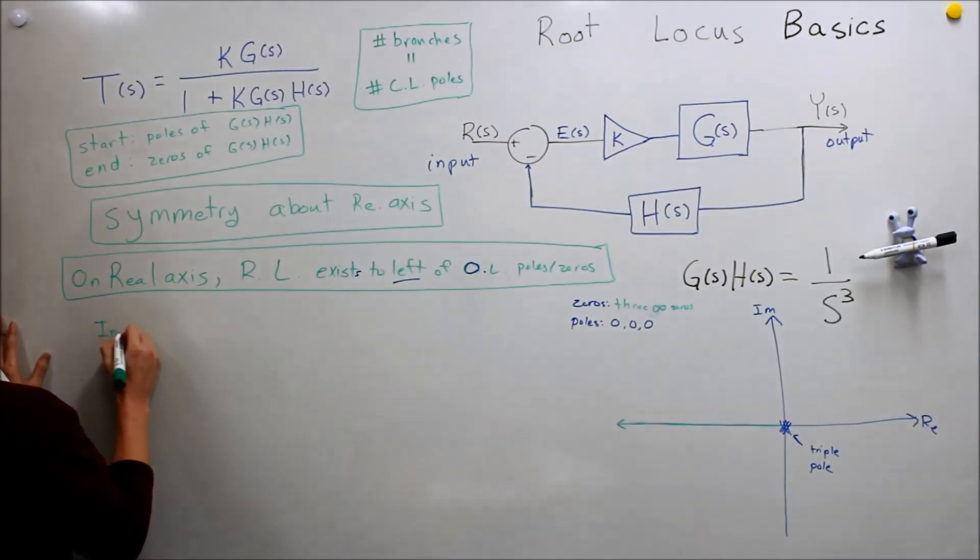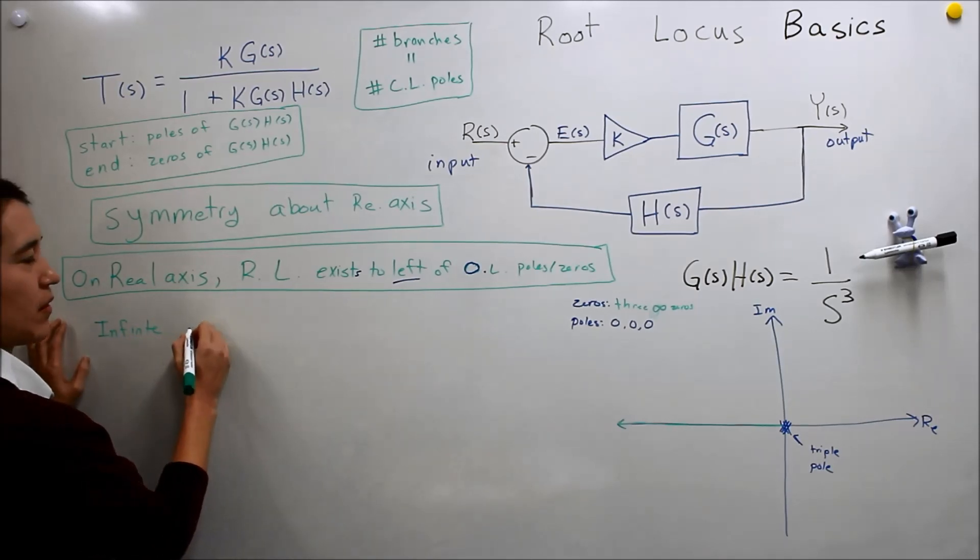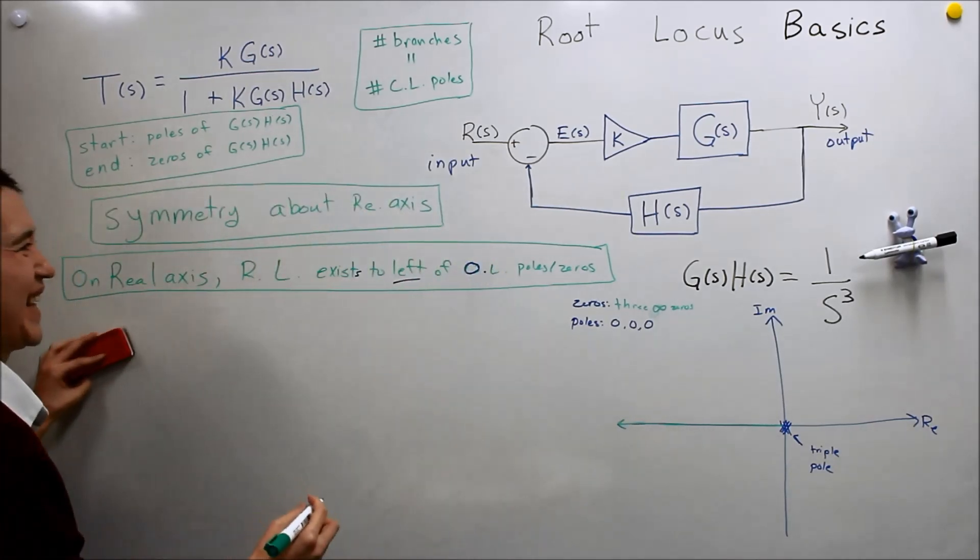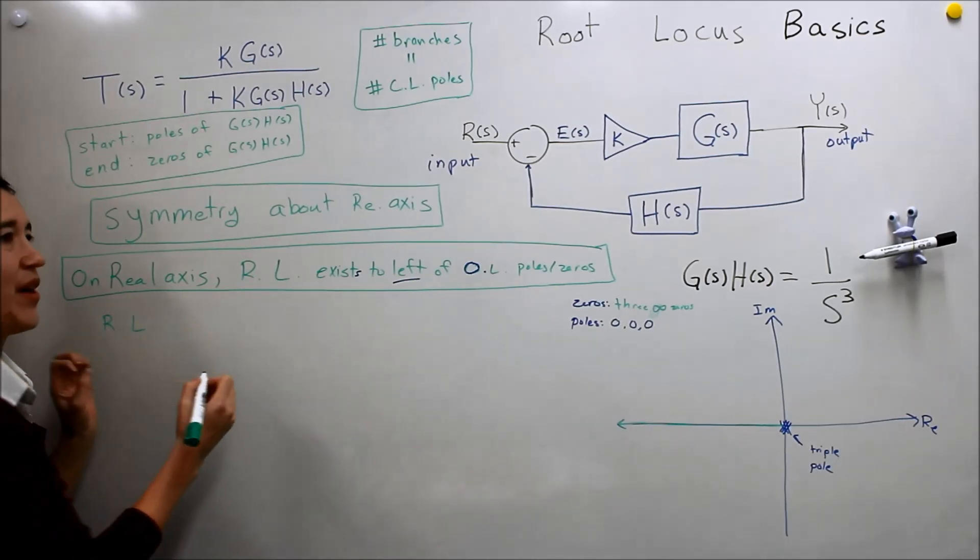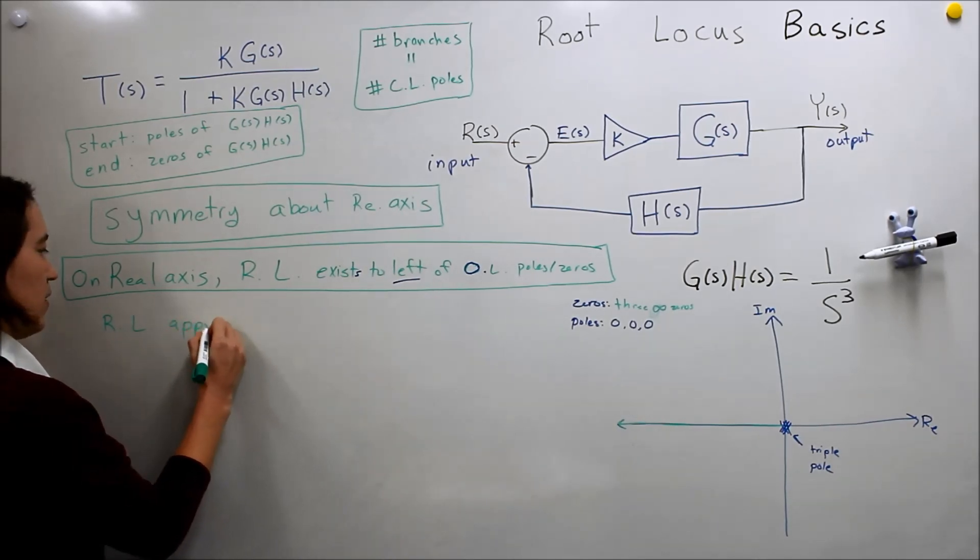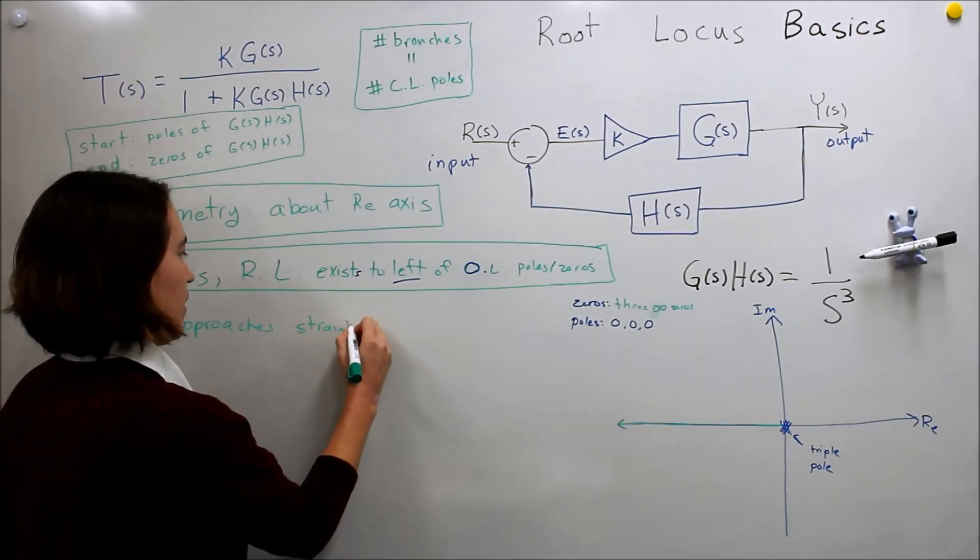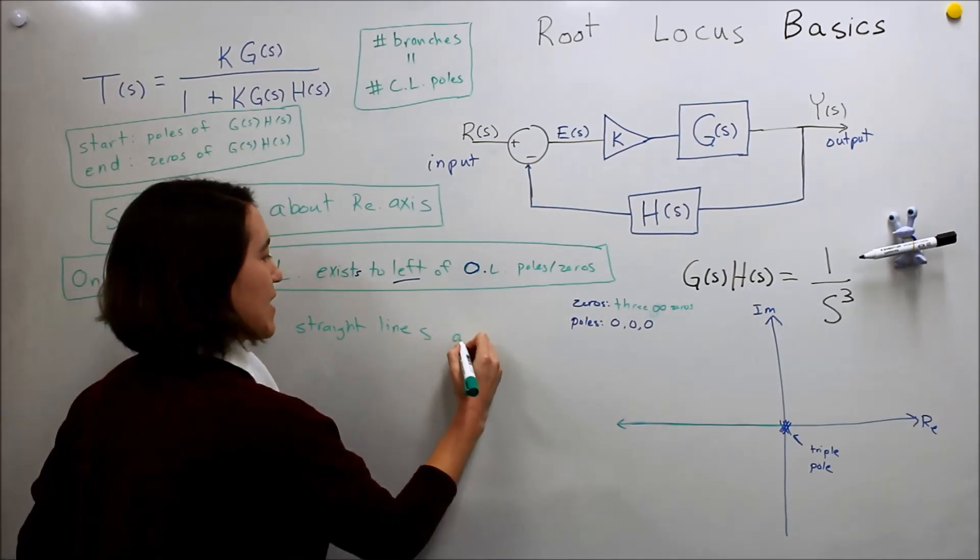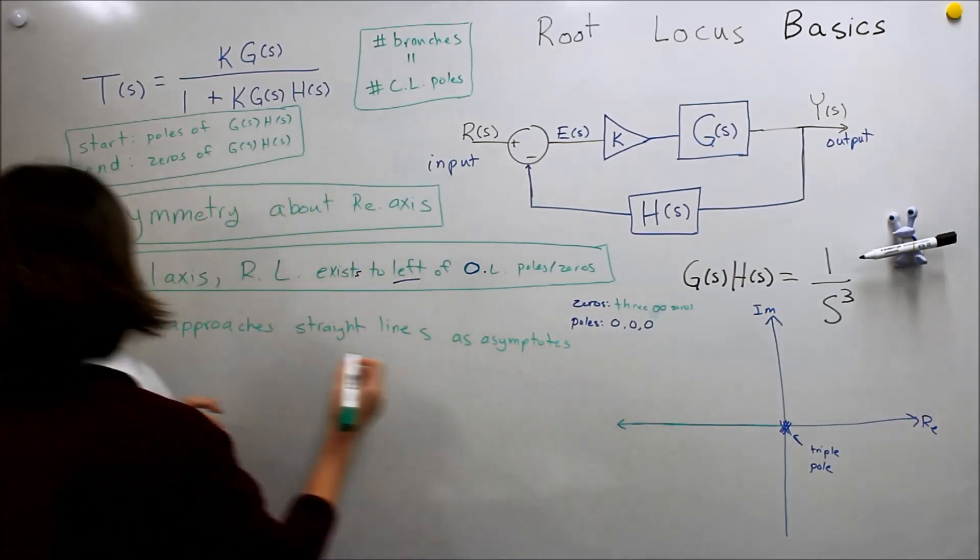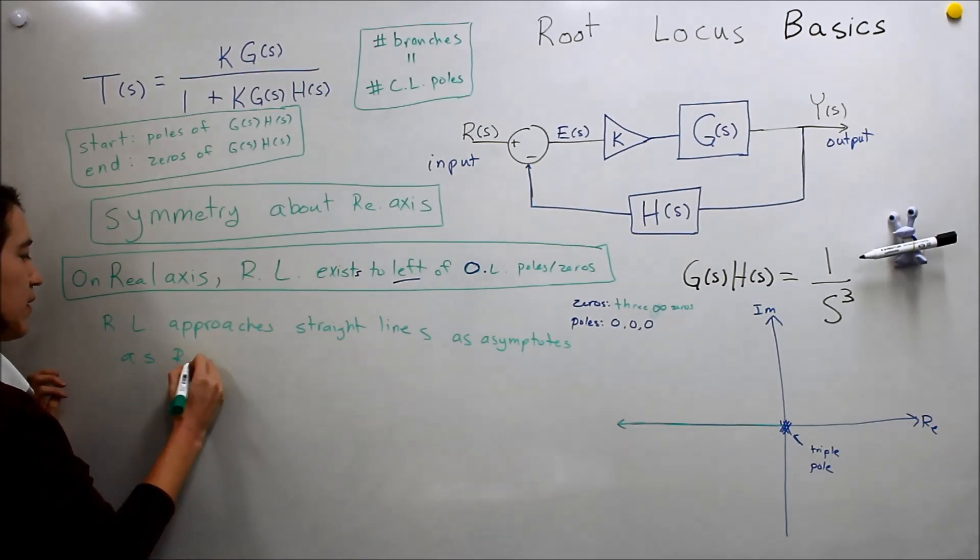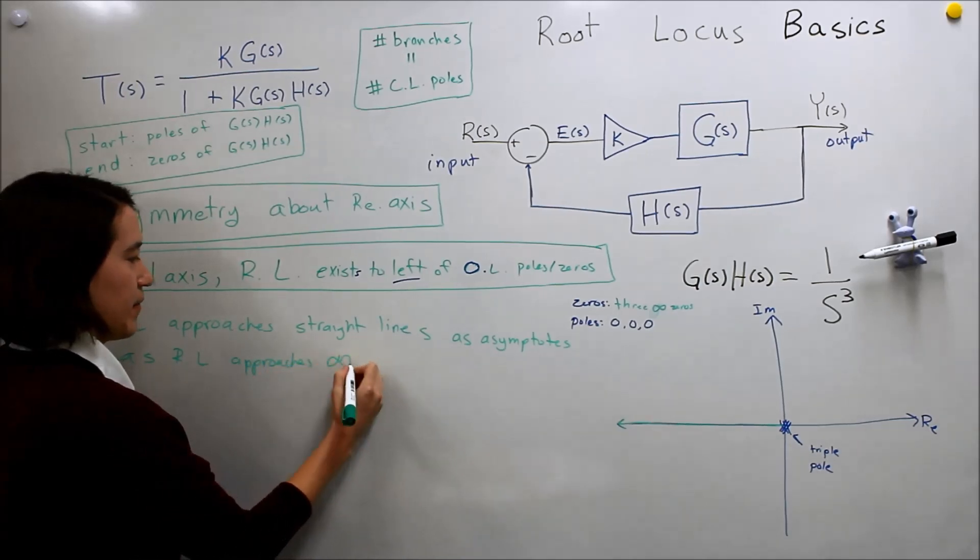So for the root locus, for infinite, I guess there are zeros. They're the poles as they go to infinity. I'm going to write it this way. So for the root locus, I'm just going to write it as RL, approaches straight lines as asymptotes as the root locus approaches infinity.